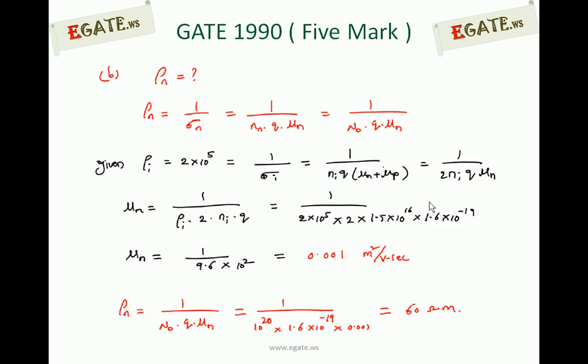Next, resistivity of the extrinsic semiconductor. Resistivity of N-type is the reciprocal of conductivity: ρn = 1/(Nd×q×μn). Nd is known as 10²⁰, q is known, but μn is not directly specified. Since μn = μp, we need to calculate μn from the given intrinsic resistivity.